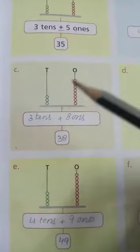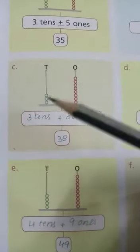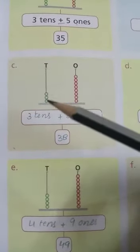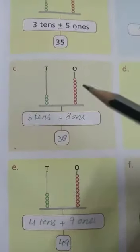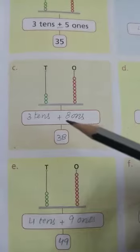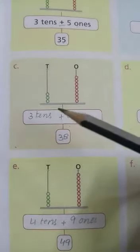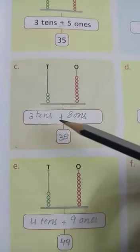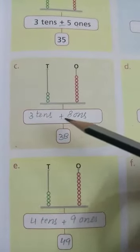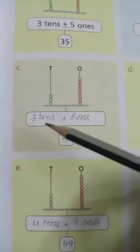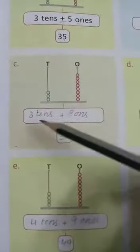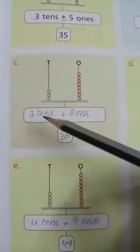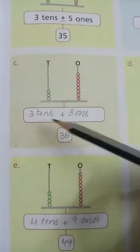Come on to question c. How many tenths? One, two, three — three tenths. How many ones? Eight ones. Write the plus sign in the center. The total of these two is 38 — write 38.